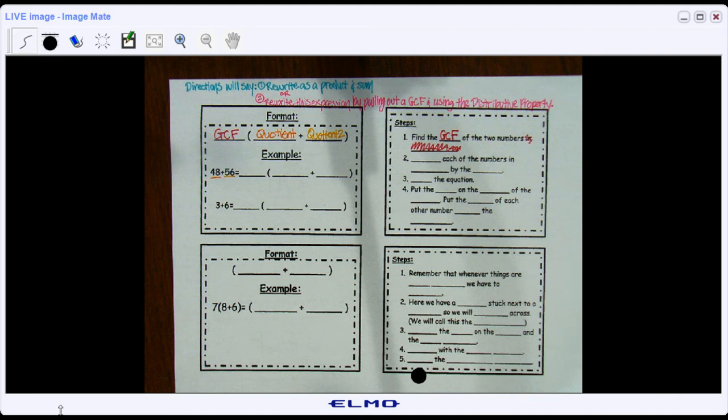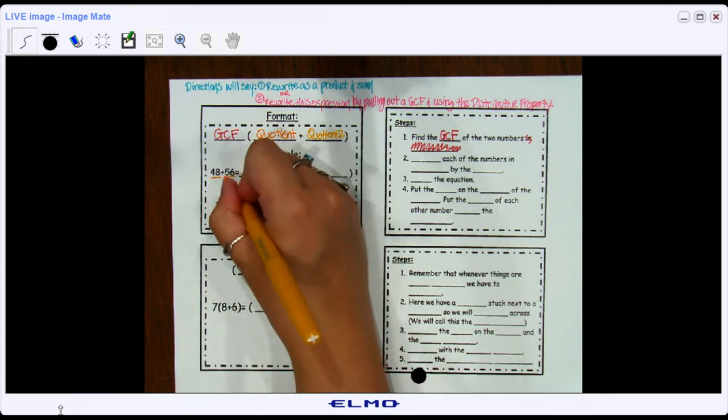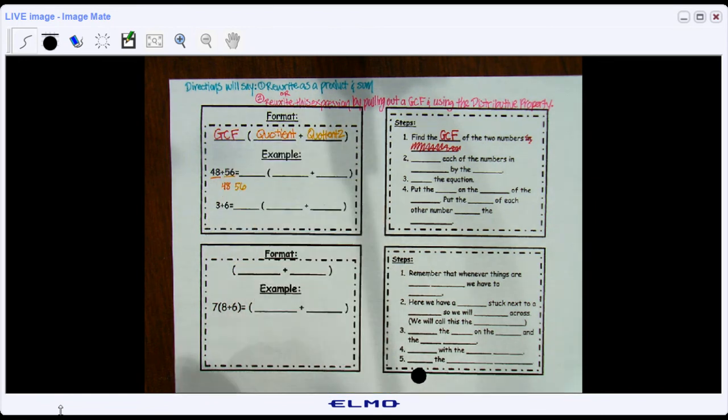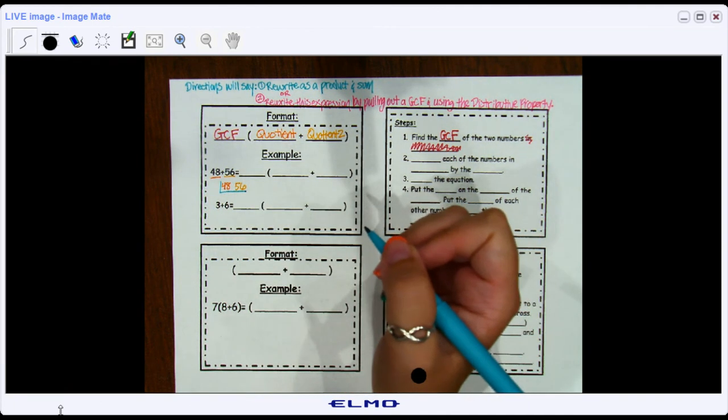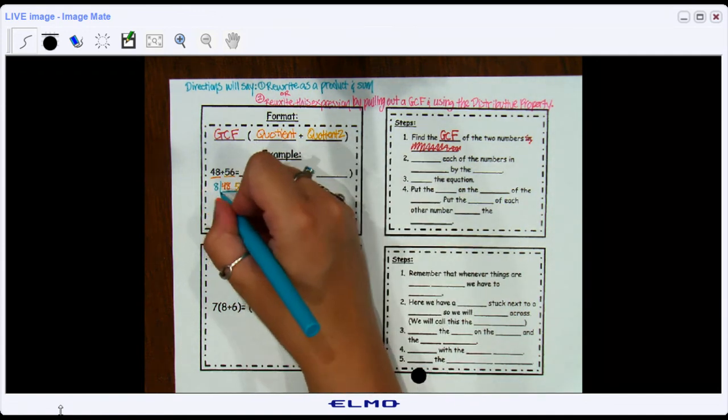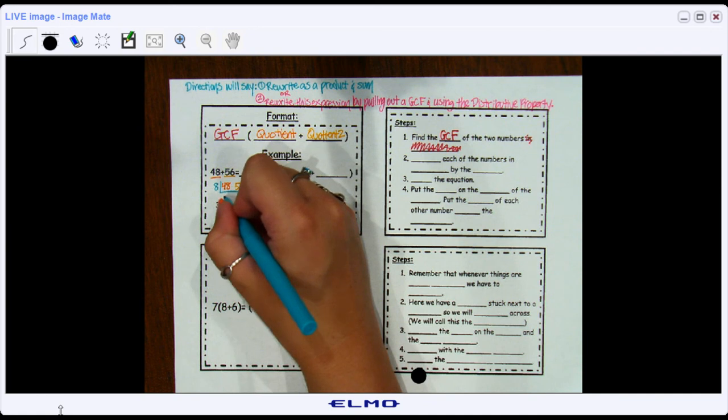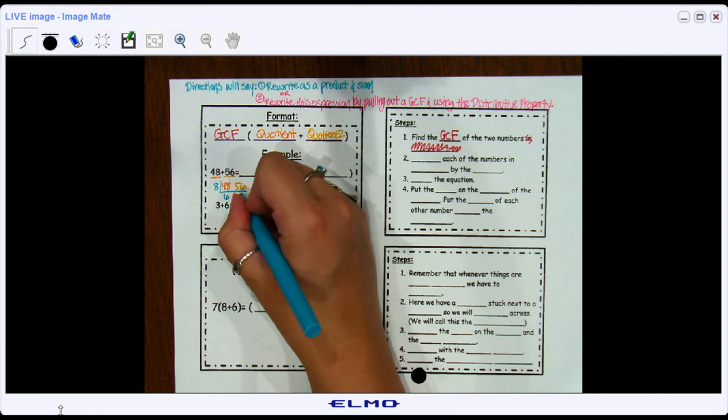Then in order to do that, we do exactly what we did before. So I'm going to write my 48 and my 56. To find the GCF, I do the preferred method of the ladder method. And I think what number can go into both of these numbers? I know 8 can go in. And 8 times what is 48? 6. 8 times what is 56? 7.